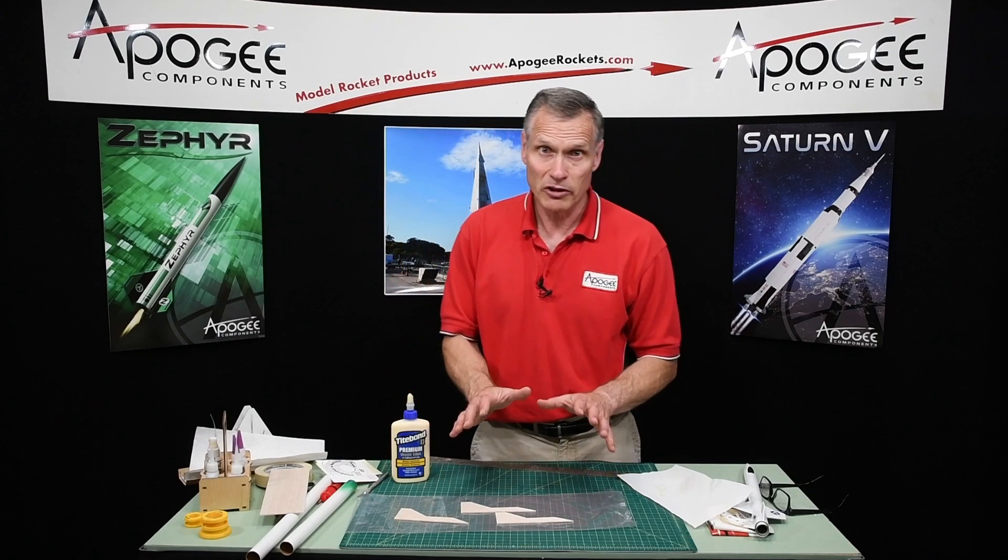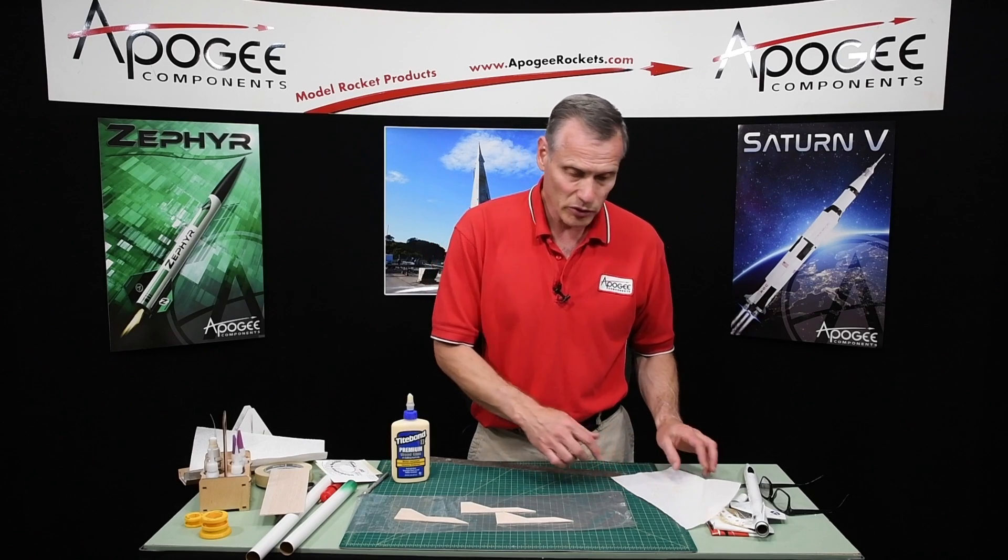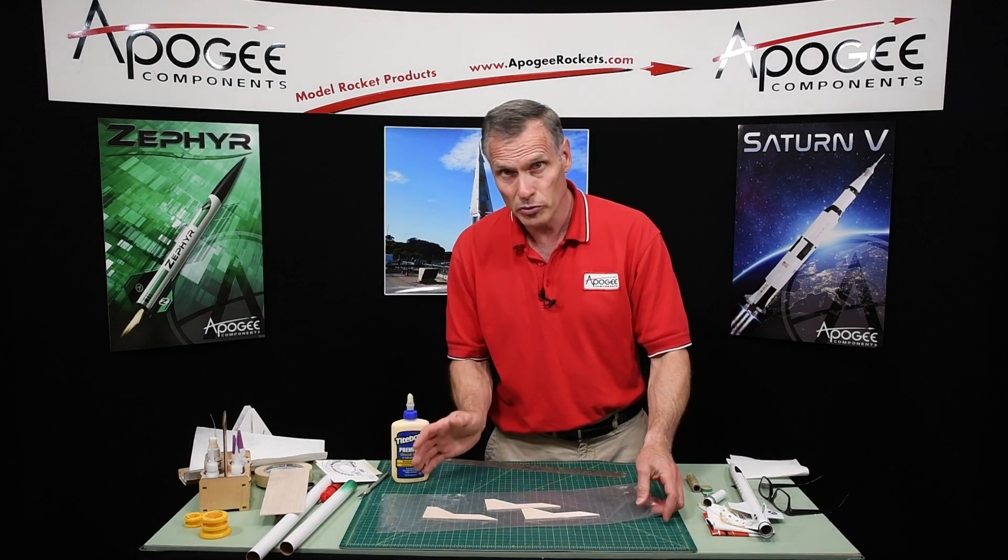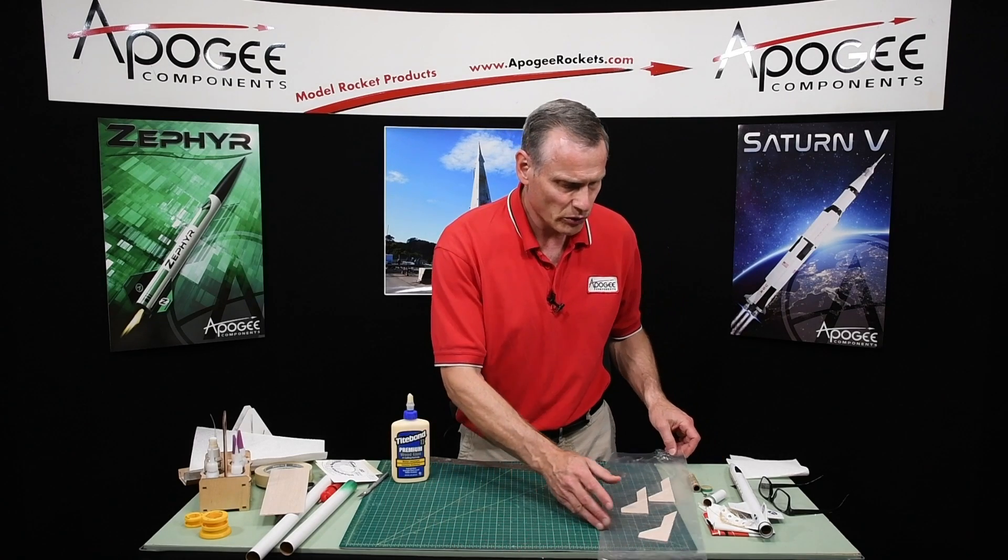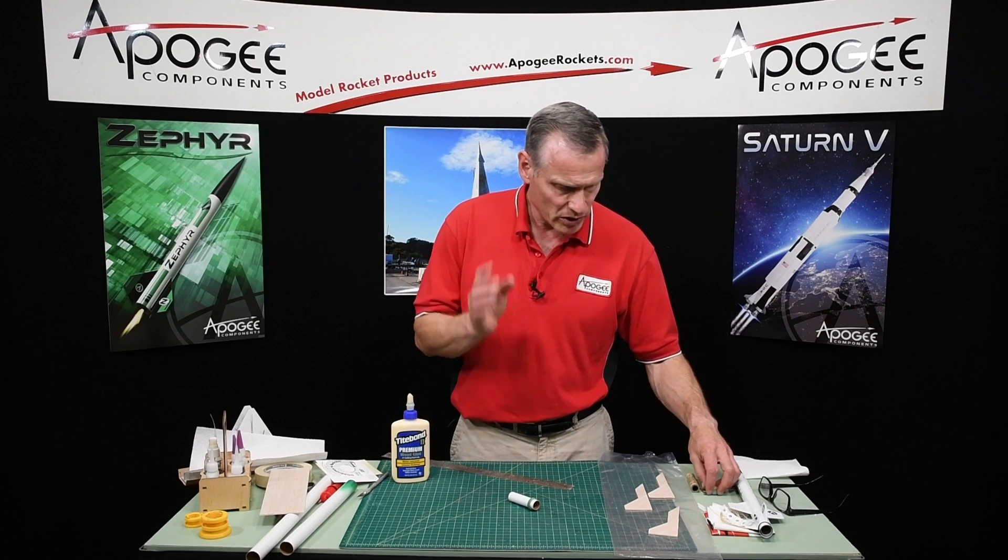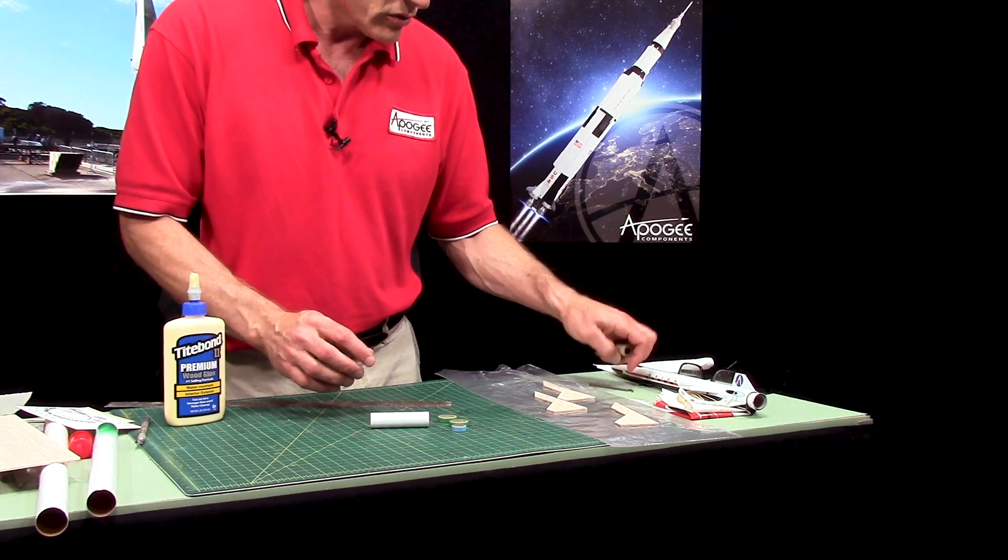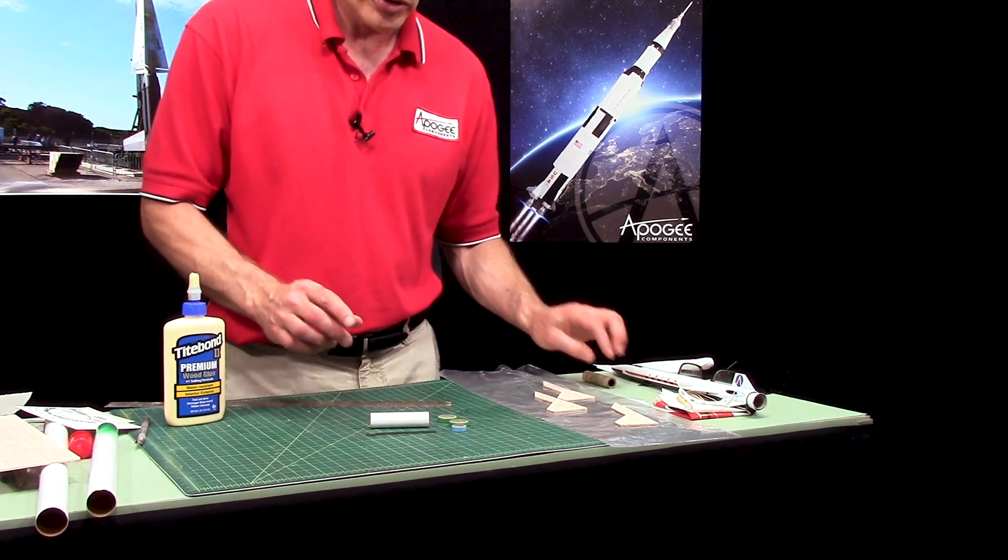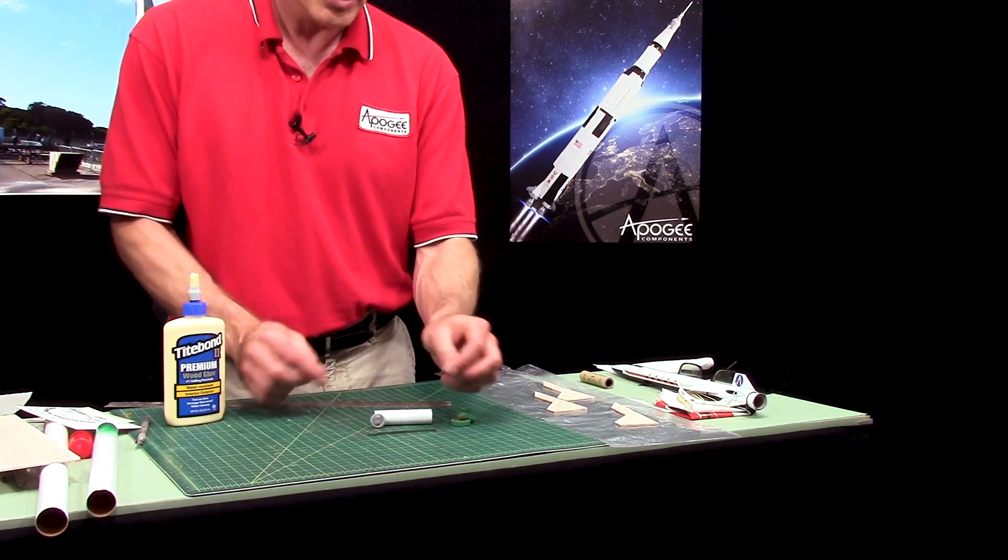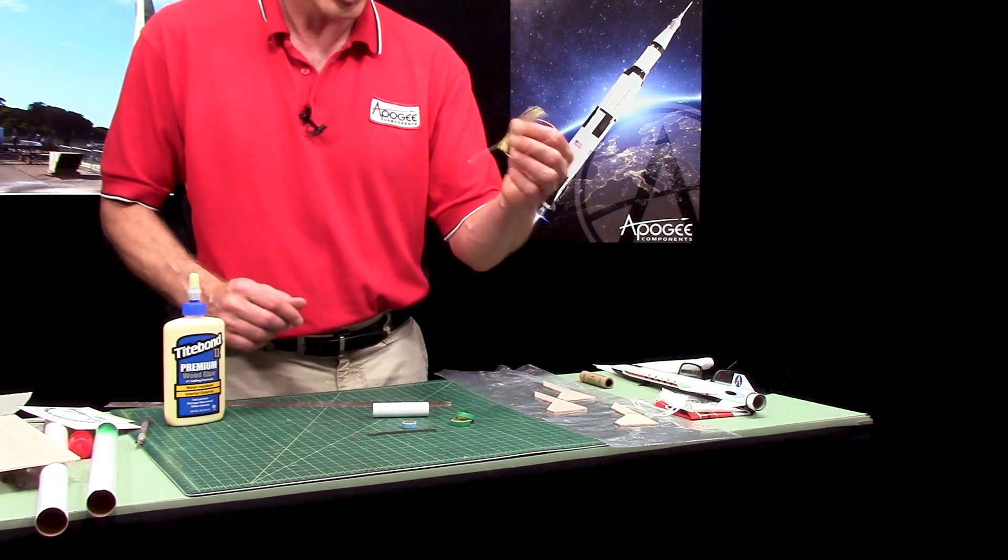Now my fins have been glued up and I'm going to allow these time to dry. While I'm doing that we can start the next part, which is either cutting the tubes to length or we can start building the engine mount. I like to build the engine mount because there's going to be a lot of glue that has to dry. The engine mount is the engine tube, the engine hook, two centering rings, the engine block inside, and we're also going to need our Kevlar shock cord.